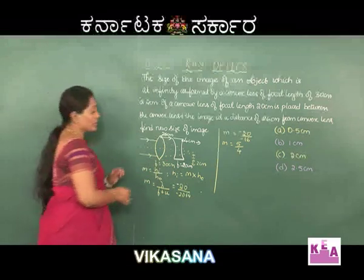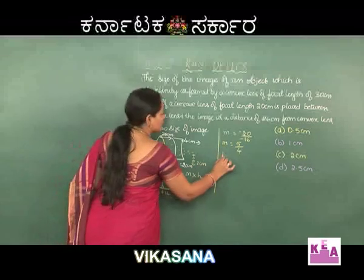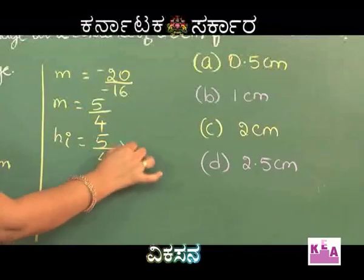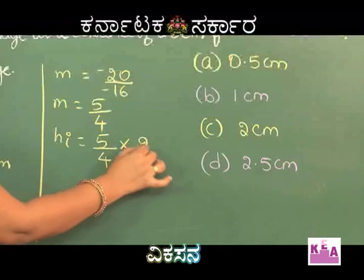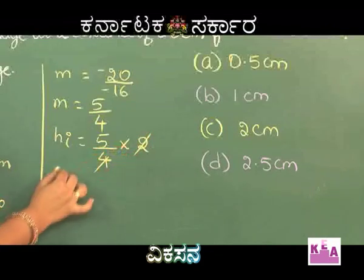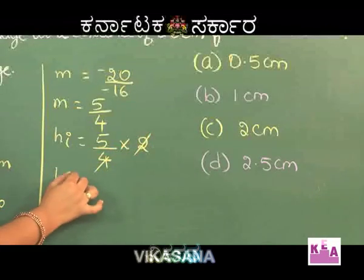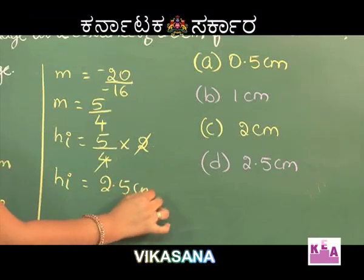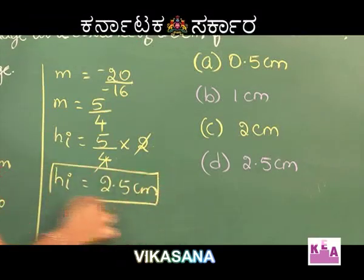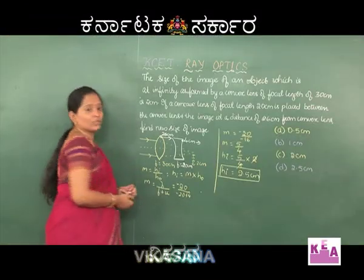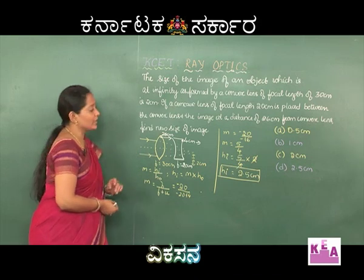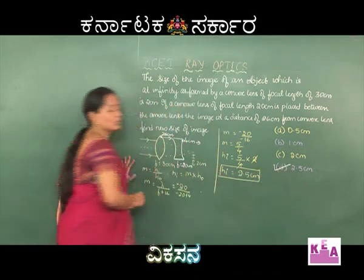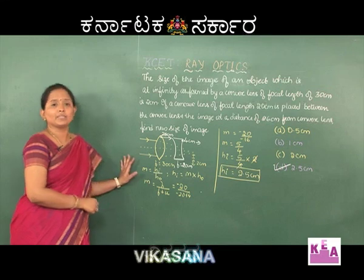Substituting into the formula, the new size of the image is HI equals 5 by 4 into 2, which gives a height of image of 2.5 centimeters. So the correct option for this question is option D, which is 2.5 centimeters.